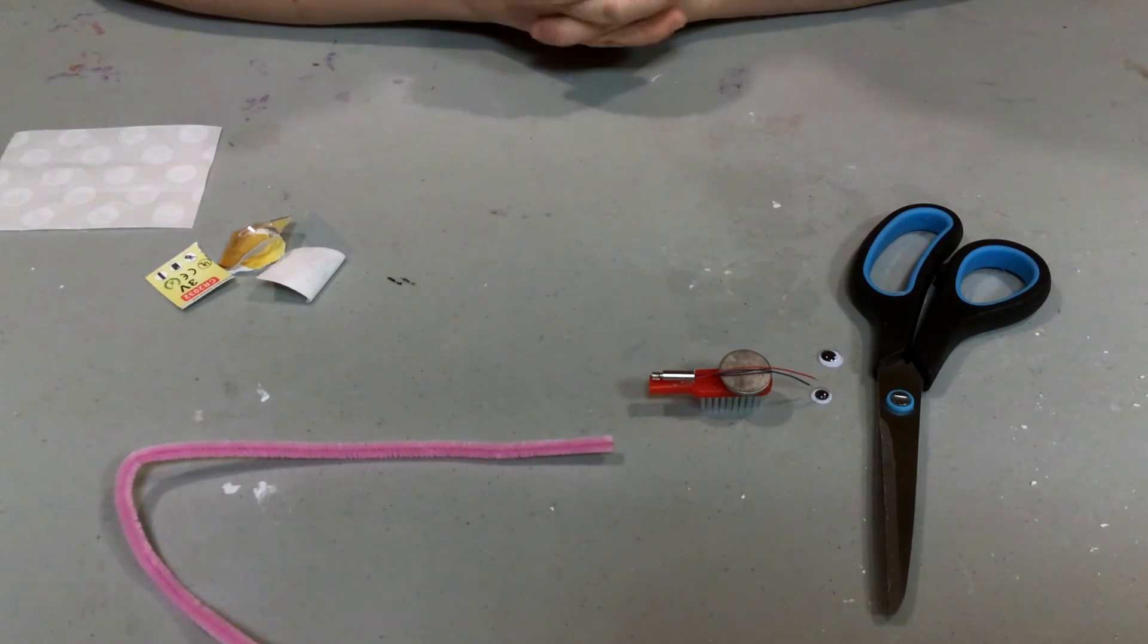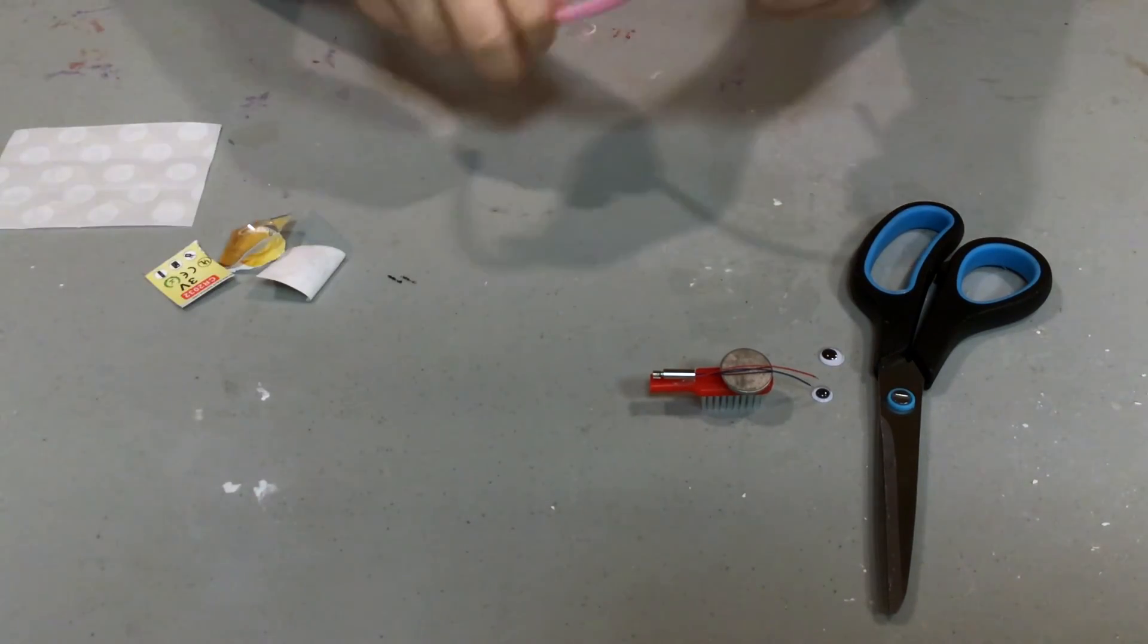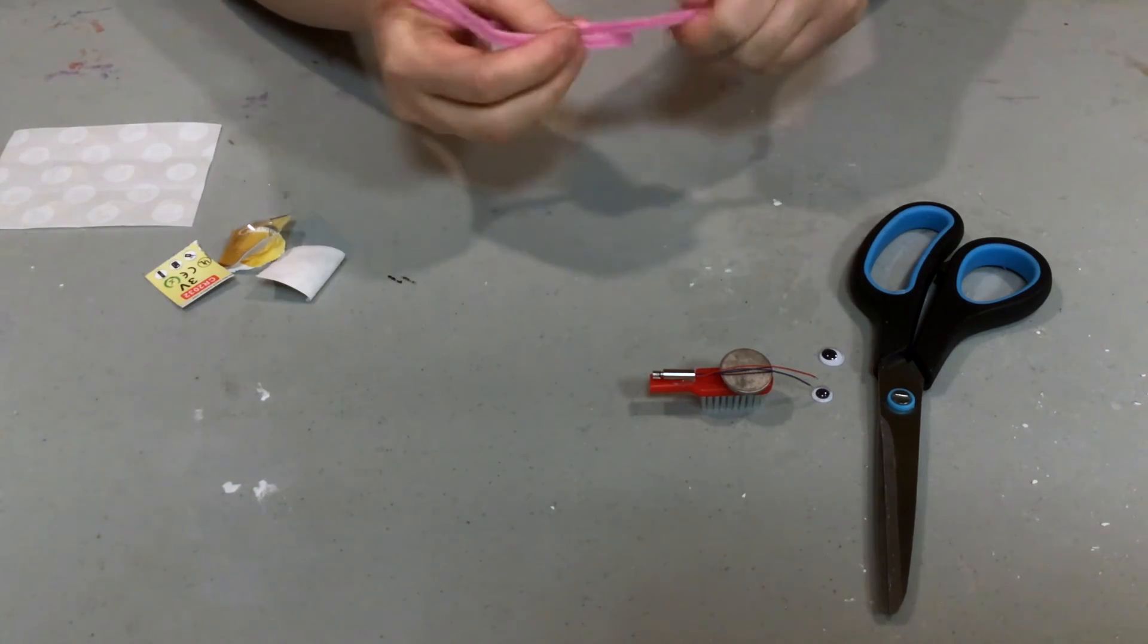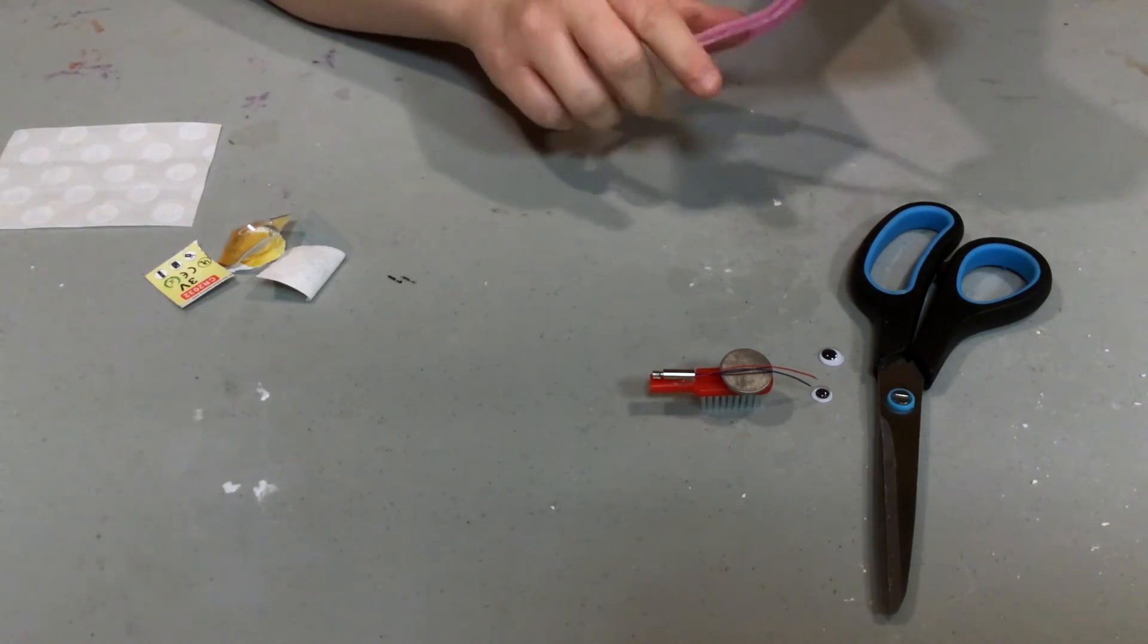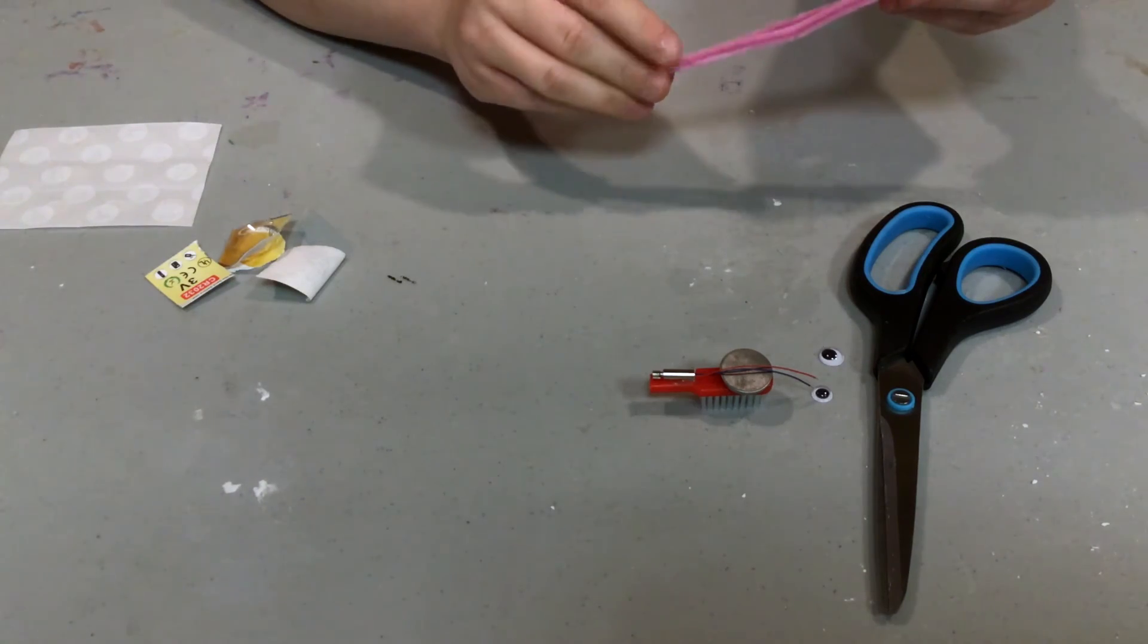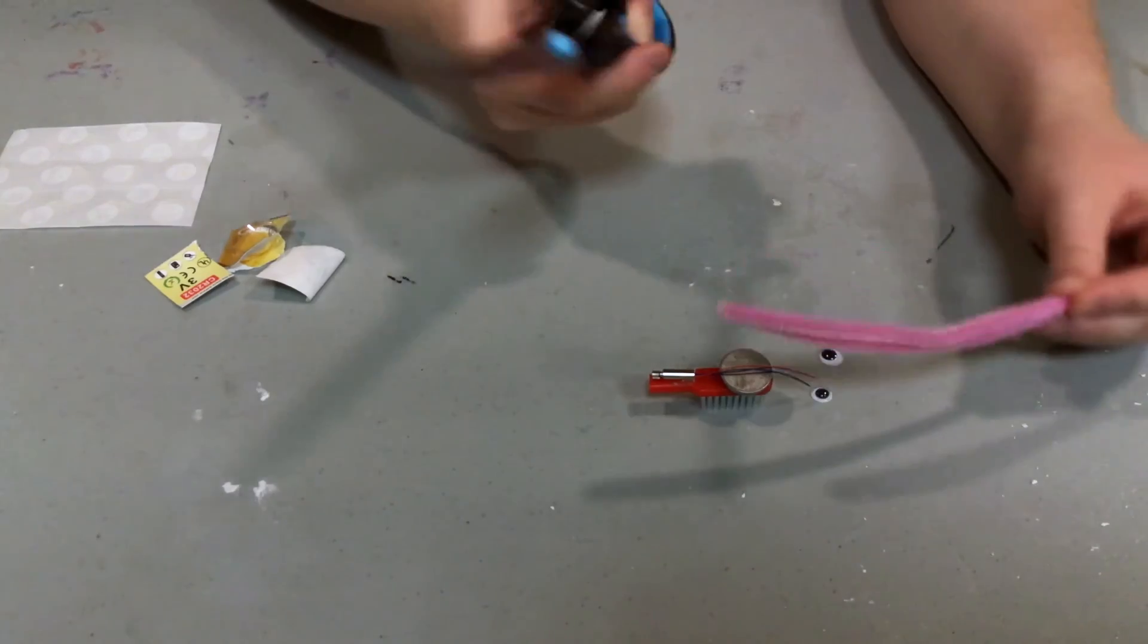Because now it is time to go ahead and make the legs for our Bristol Bot. And these are going to help keep everything secure and stable. So, what I do is just go ahead and cut the pipe cleaner in half.